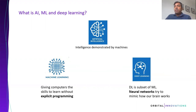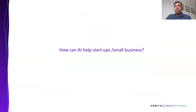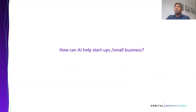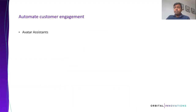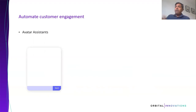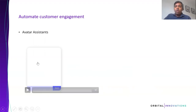So we know what AI, ML, and deep learning are. Let's speak about how AI can actually help startups and small businesses. I'm going to give some applications that Orbital Global Group has deployed or is currently working towards. The first one is automating customer engagement. We developed an avatar assistant which can help interact with customers in a variety of ways, predominantly in the healthcare sector.